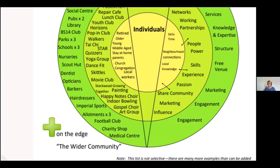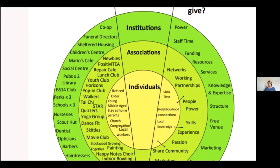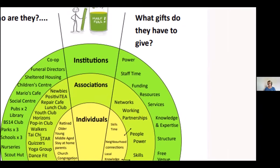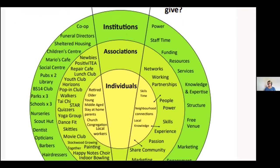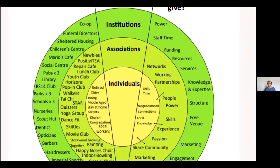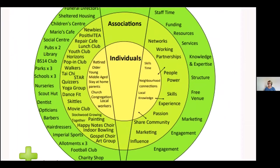When we look at those institutions, what gifts do they have to give? We start looking at things like staff time — approaching people to see if they've got time to support our initiative — resources, gifts in kind that we can be approaching these institutions for to help us set up our new initiative, the services they provide, the contacts they make in the community, the people they reach, how they can help us market what we're trying to achieve, and how they can engage with us.